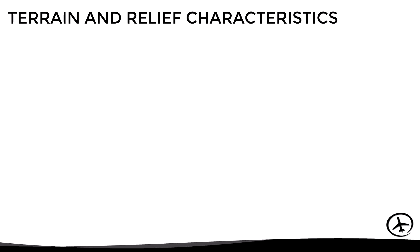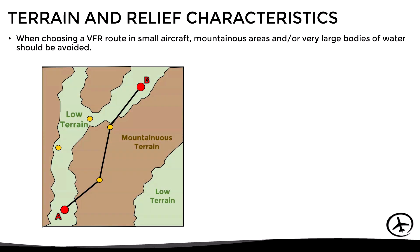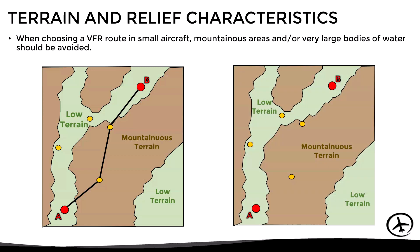Let's move on to terrain and relief characteristics. When planning a flight, we must be aware of the capabilities and performance of our aircraft. When choosing a route in a light general aviation aircraft, mountainous areas, high terrain, and large bodies of water should be avoided. In terms of mountainous terrain, we should try to plan the route along valleys or over low terrain, and avoid flying over high mountainous areas.